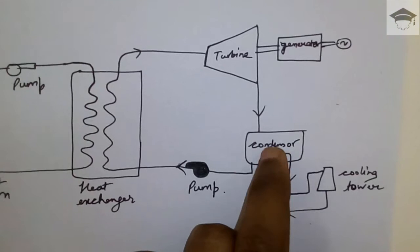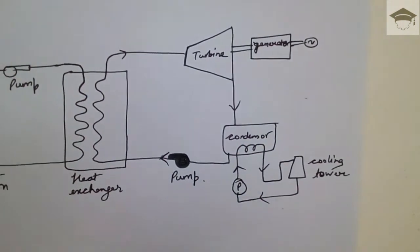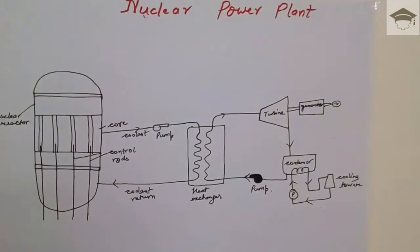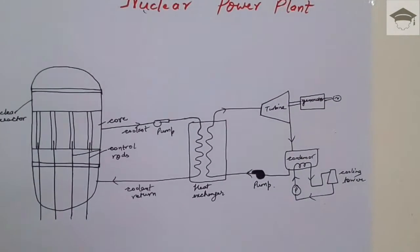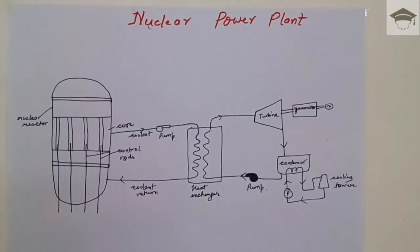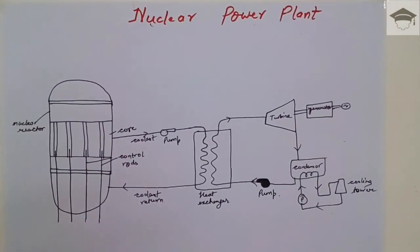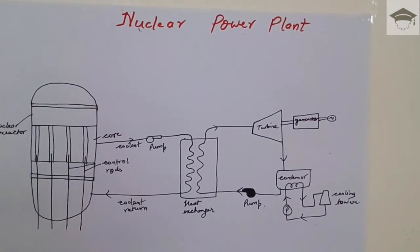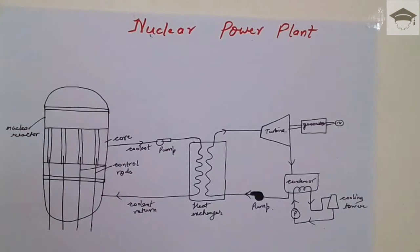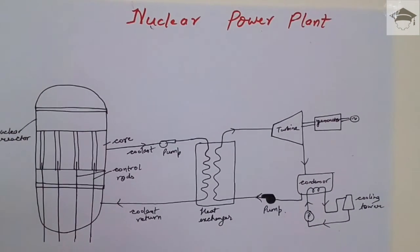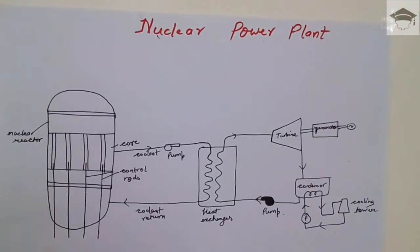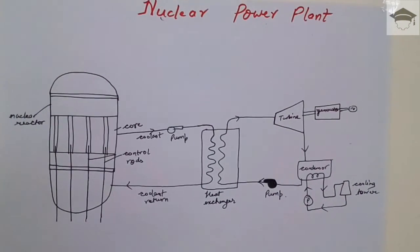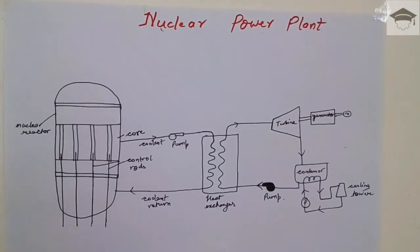All right, so this was the circuit, this was the complete cycle of nuclear power plant and how the electricity is produced using the nuclear fuel. So if you have liked this video, please press the like button. Do share it on Facebook, WhatsApp, Google Plus, Twitter, etc. And do subscribe my channel. If you have any doubt, please mention in the comment section. Till next time, take care. Bye.